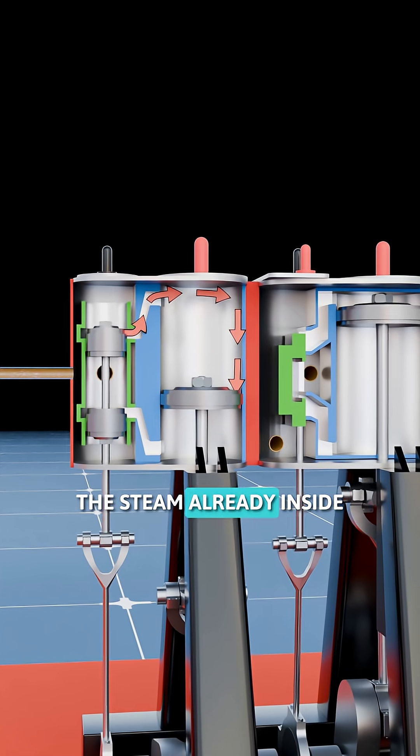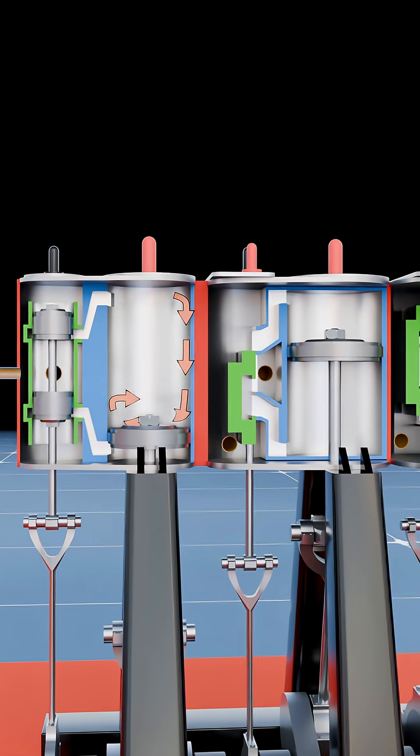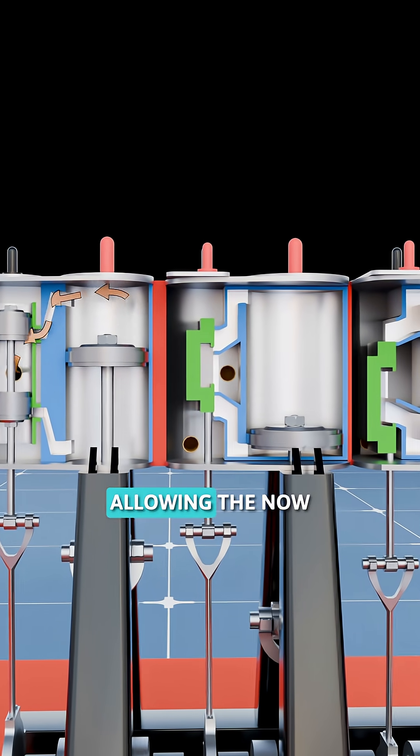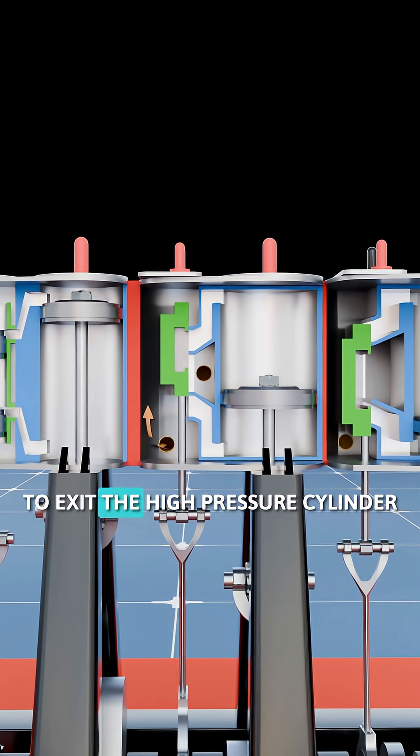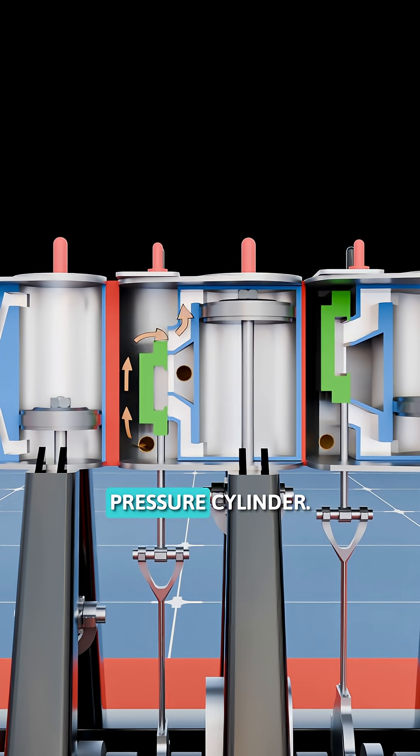The steam already inside continues to expand, driving the piston to the end of its stroke. At the end of the stroke, the valve reaches its highest position, allowing the now lower-pressure steam to exit the high-pressure cylinder and flow into the steam chest of the intermediate pressure cylinder.